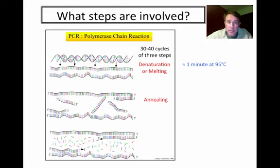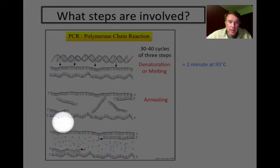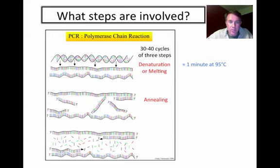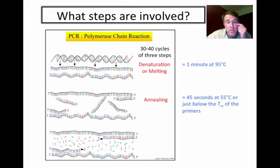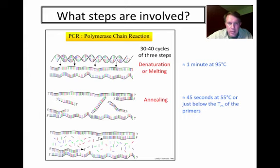The next step is annealing, where the primers — those short segments synthesized specific for your gene of interest — will anneal or stick to the single-stranded DNA at very specific locations, one upstream and one downstream. That is usually carried out for about 45 seconds to a minute at about 55 degrees, or just below what's known as the melting temperature of the primers. You'll learn more about those details as we get into primer design.